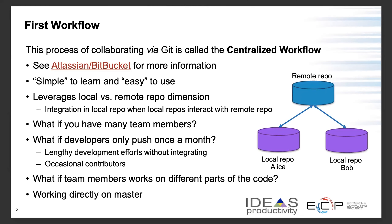The first thing to know is that Git is a decentralized version control system. However, you can use Git in many different ways and patterns. The simplest pattern is to use Git in a centralized manner, called a centralized workflow. The Atlassian/Bitbucket URL on the slide has quite a bit of information on workflows and centralized workflow.